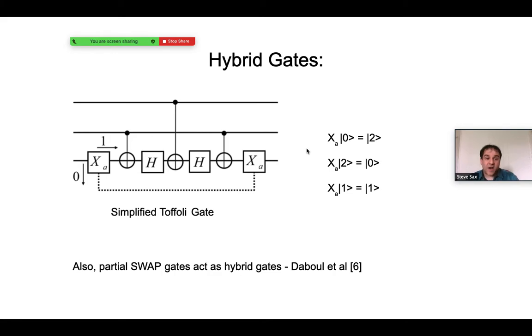The way this X_A gate operates is as follows. It flips between the zero and two states, and it leaves the one state unchanged. Because this gate can be decomposed into both qubit and Qutrit gates, it really is a hybrid gate.